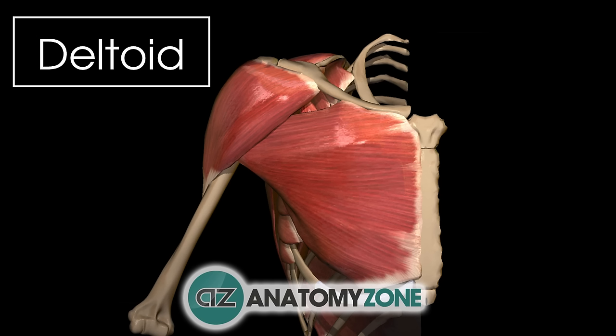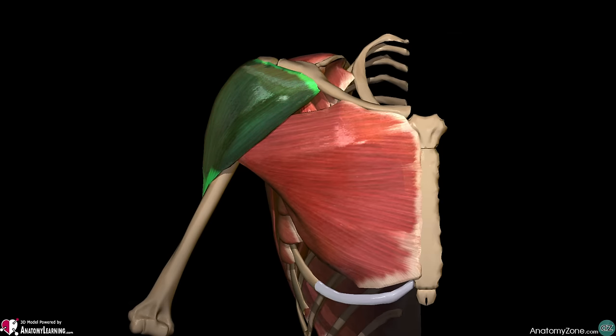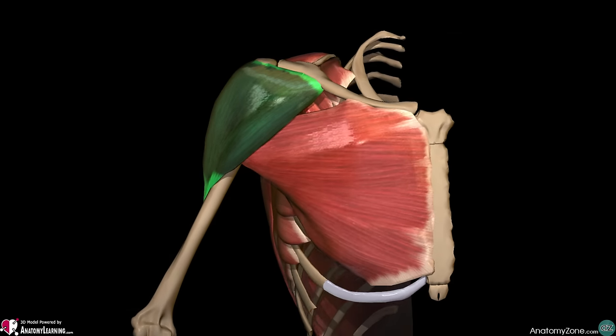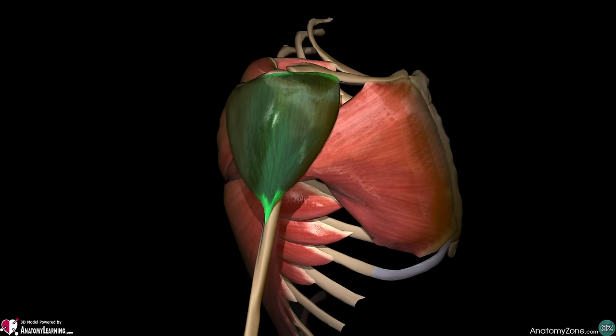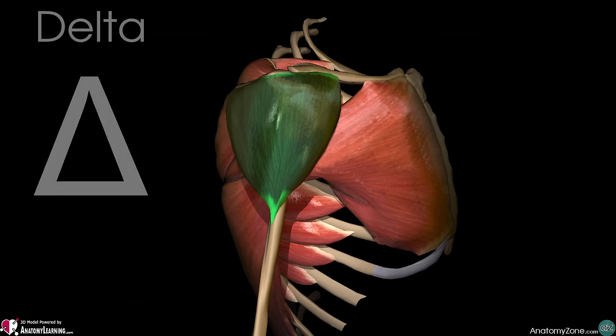Hi, this is Peter from AnatomyZone and in this video we will take a look at the anatomy of the deltoid muscle. The deltoid muscle is the large superficial muscle of the shoulder which gives its characteristic shape and contour. It's called the deltoid muscle because of its roughly triangular shape, which resembles the Greek capital letter Delta.